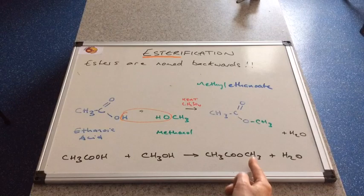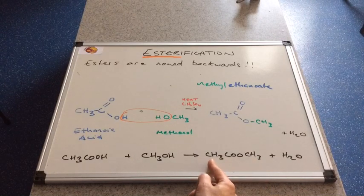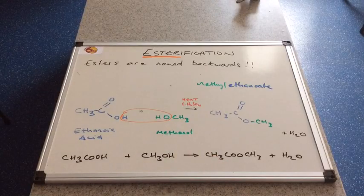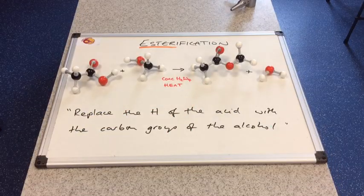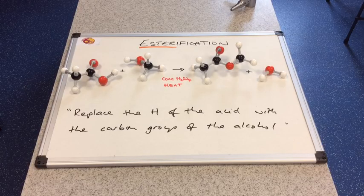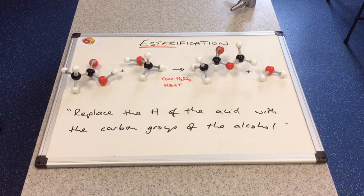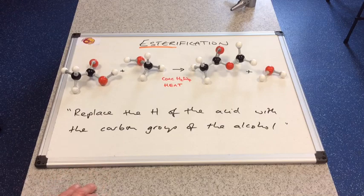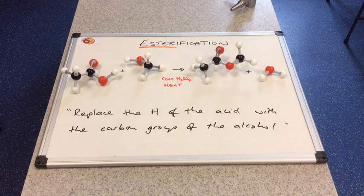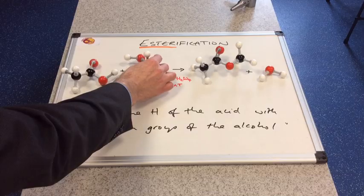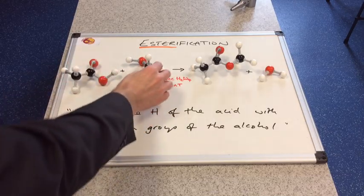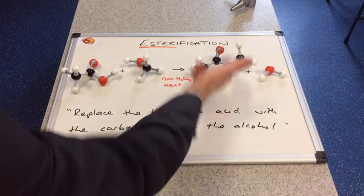And the naming: name that bit first - so methyl. And then name that bit second - two carbons, ethanoate. If you have a look online, you can see various explanations of esterification. One of my favourite ones, even though it's a little bit inaccurate in terms of the actual mechanism of the reaction, but for A level, it's absolutely fine and it will get you all the marks. If you think of it like this: when you make an ester, you need to replace the hydrogen of the acid. So we're going to take that off. With the carbon group from the alcohol. So this bit here. To replace the hydrogen of the acid with the carbon group of the alcohol. And of course, that's what you would get.